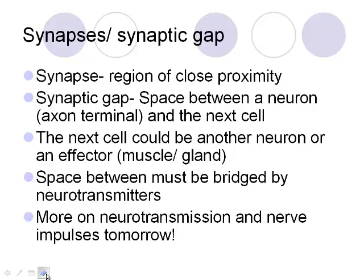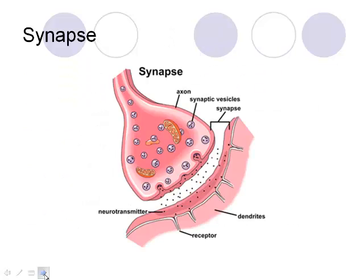We'll go into more detail next day, but the synapse and synaptic gap refer to the space between two neurons — specifically between an axon terminal and the dendrite of the next neuron, or between a neuron and an effector like a muscle or gland. Neurotransmitters operate in this space to send signals from one neuron to the next, and we'll cover that in more detail next time.